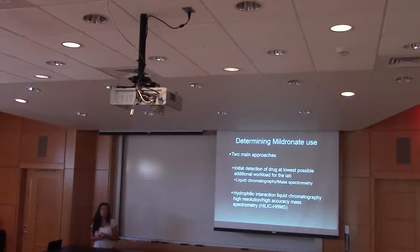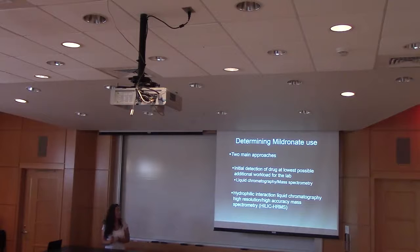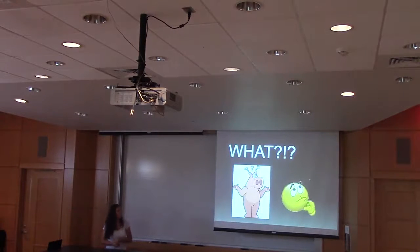So in the research that I looked at, they had two kinds of approaches to look for meldonium use. The first one was to detect the drug at the lowest possible workforce for the lab, and that was a mixture of liquid chromatography and mass spec. And that was because there are so many athletes out there, there are so many different kinds of samples and drugs that you could be testing for that they didn't really want to have to spend a lot of time, didn't want to spend a lot of money or manpower on having to test for these substances. So they wanted to make it super easy, super fast, so that a lot of samples could be tested at one general time. And then once they found out that these tests could find those samples, they used something called hydrophilic interaction liquid chromatography, high resolution, high accuracy, mass spectrometry, to basically confirm that their tests were doing the right things. And if you were all thinking what I was when I read that, you're like, what on earth is that test? Because it's a lot of words and they're really big, and science is hard.